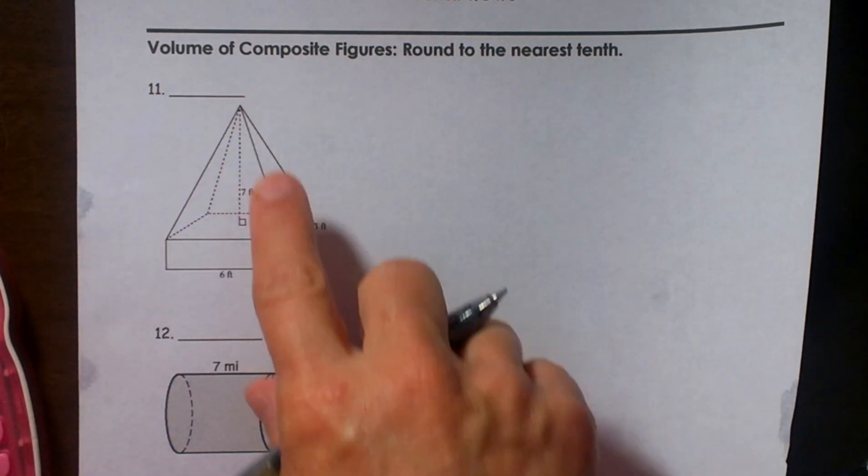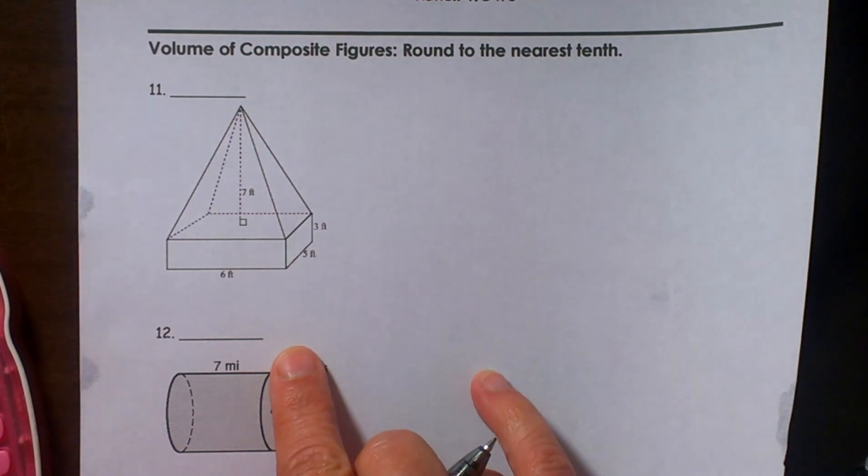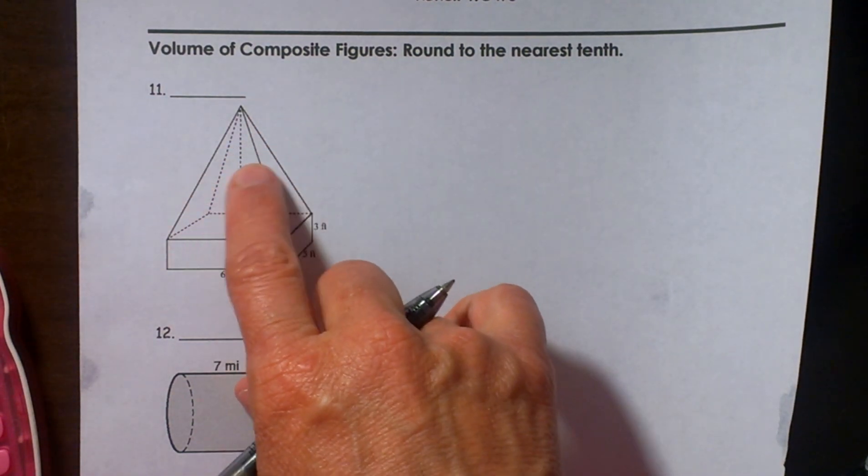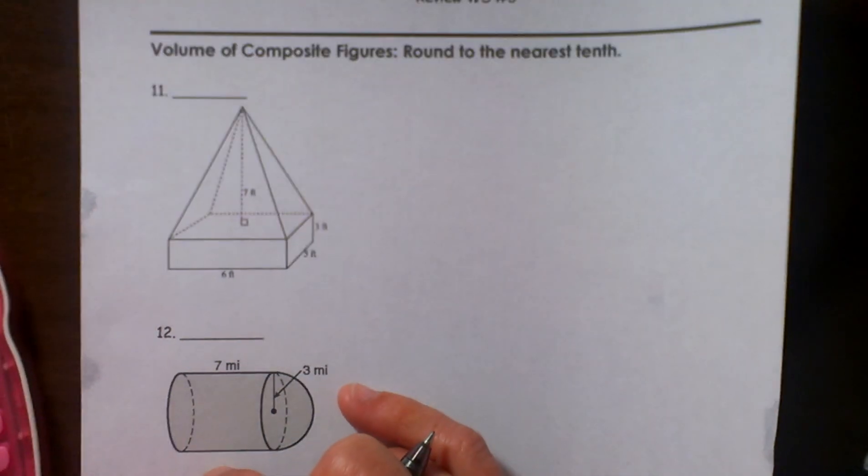Welcome to MooMooMath. Today we are going to look at how to find the volume of composite figures. All we are doing here is taking the volume of three dimensional shapes and adding them together to find the volume of the whole thing.